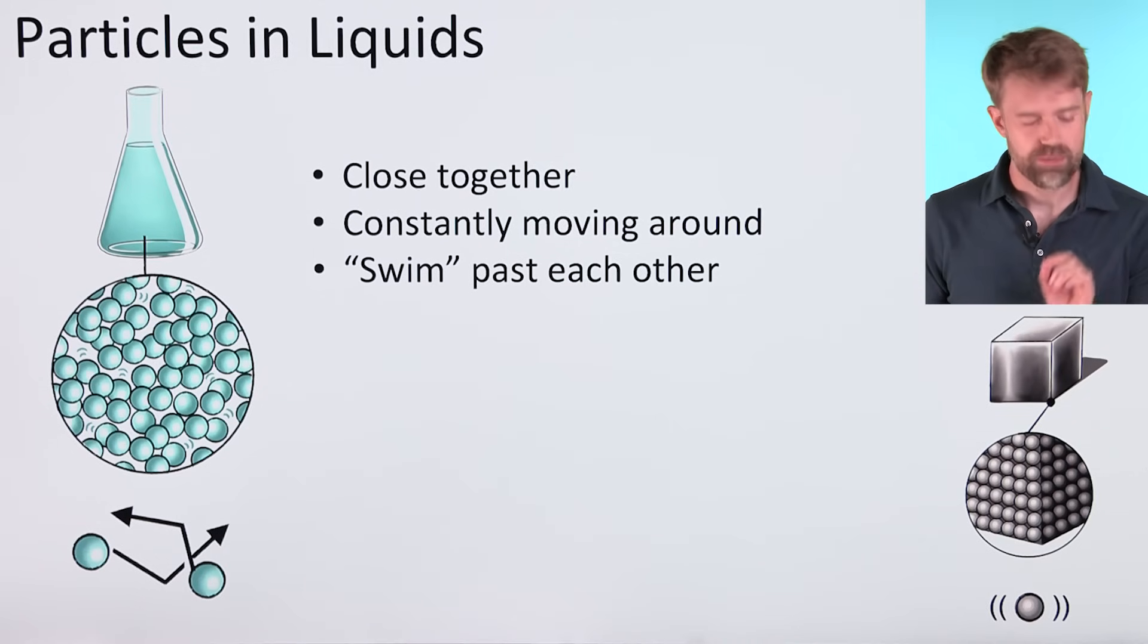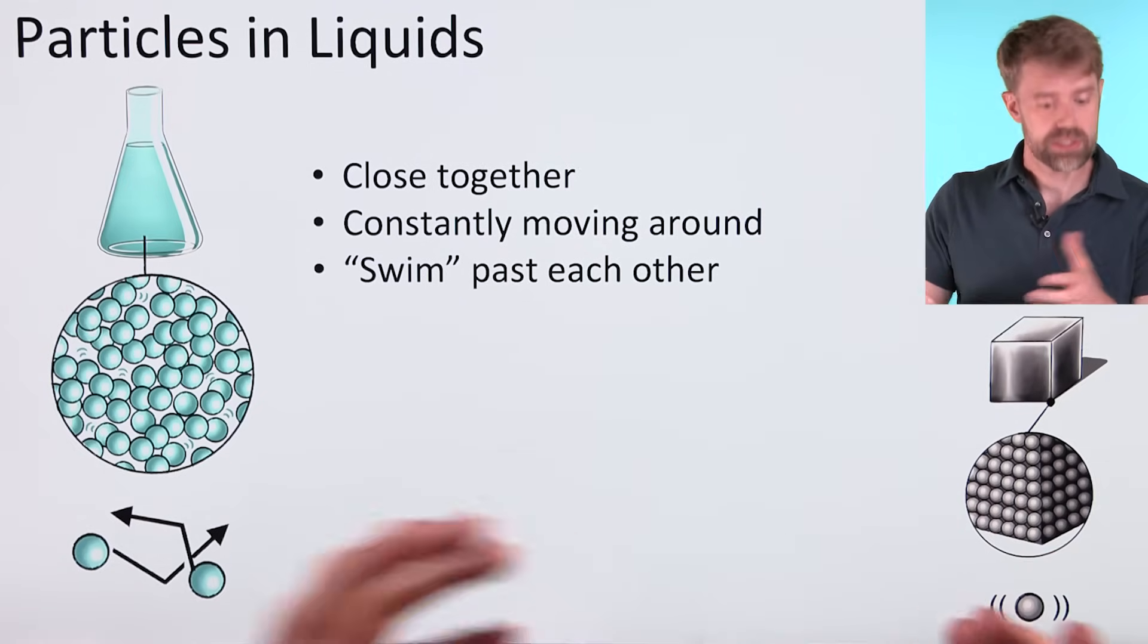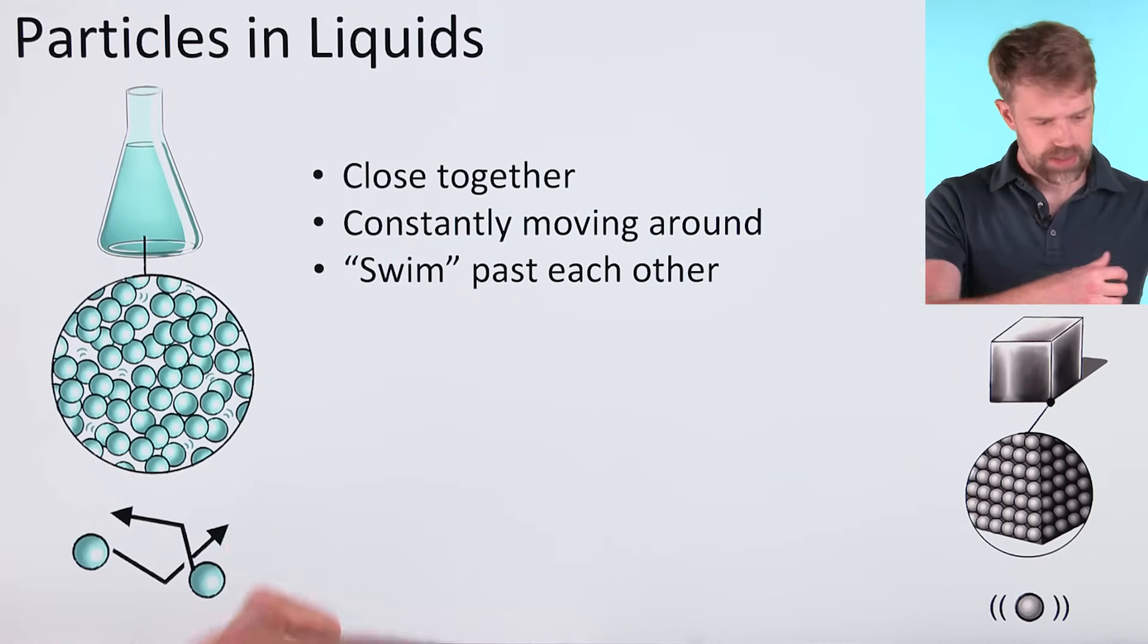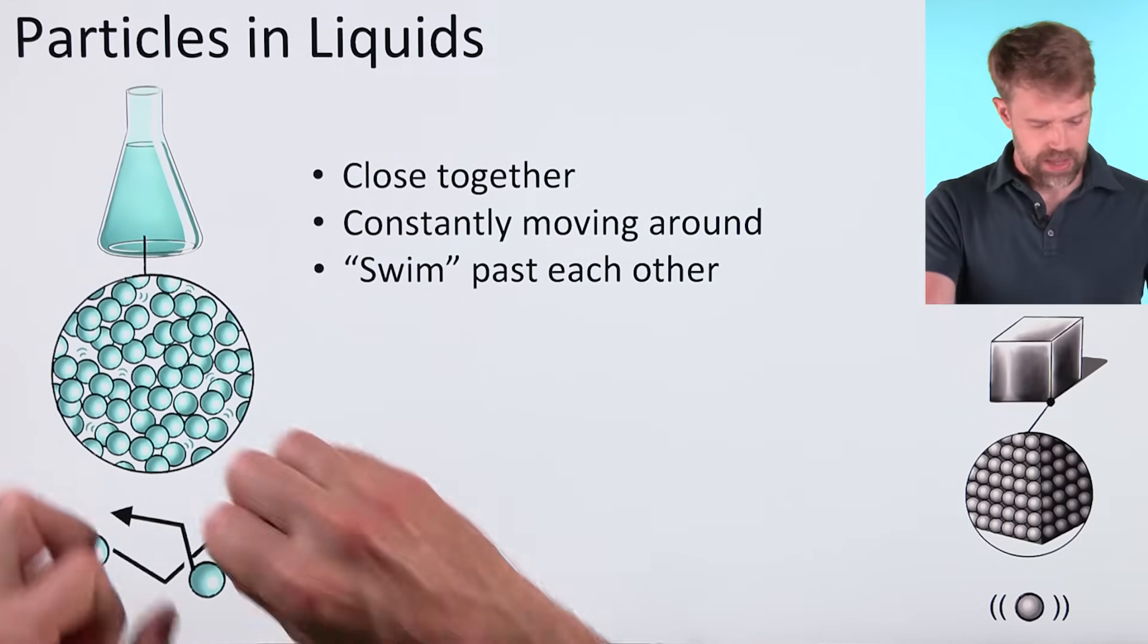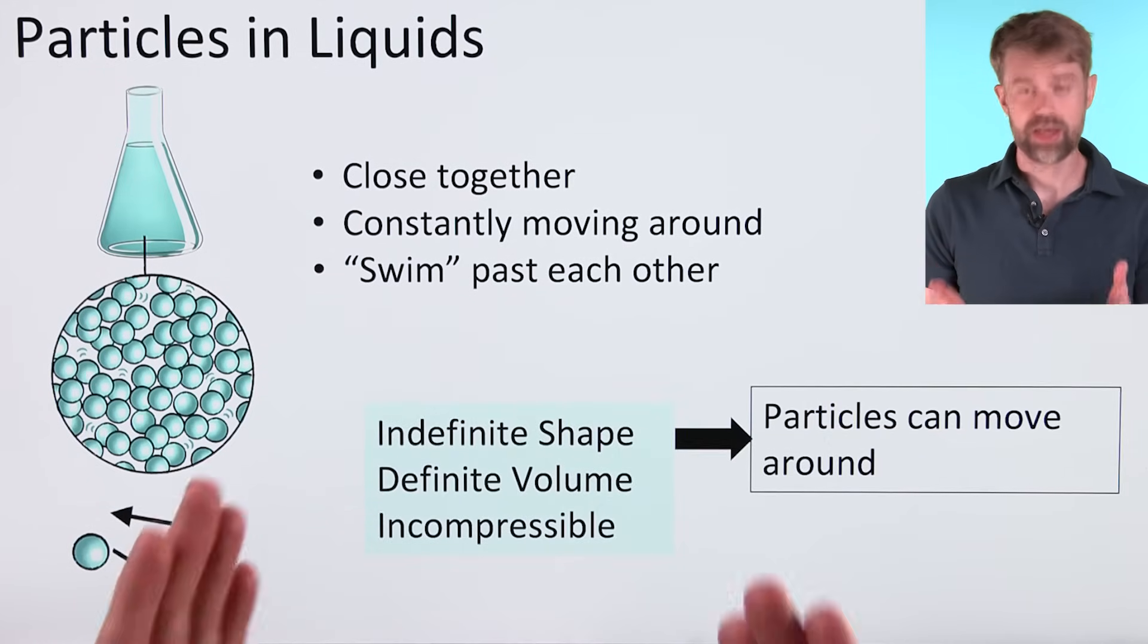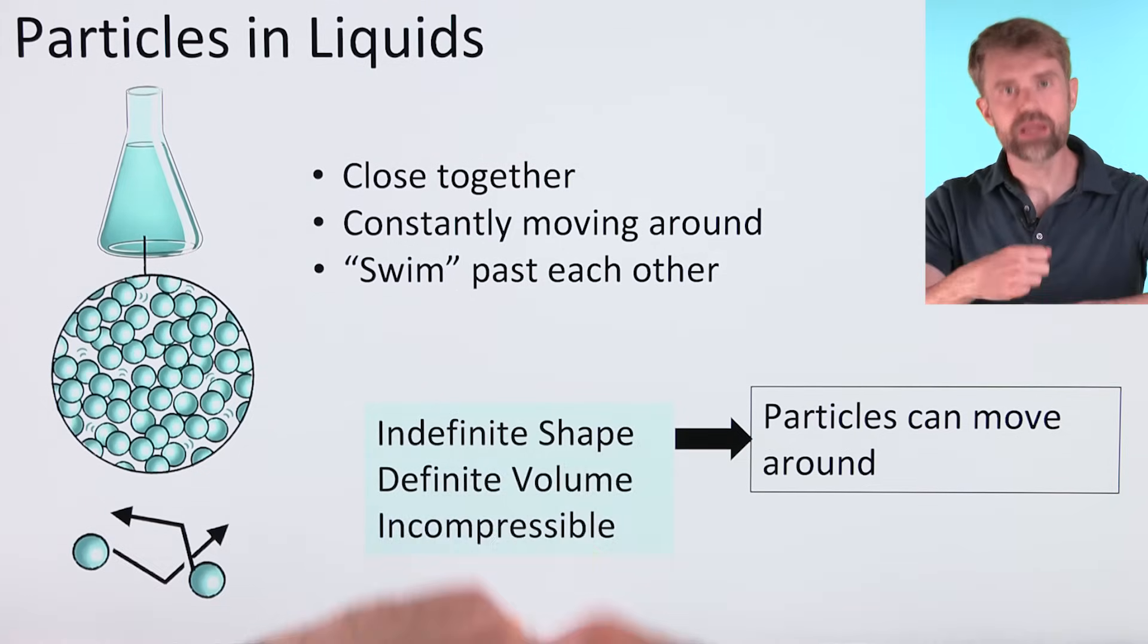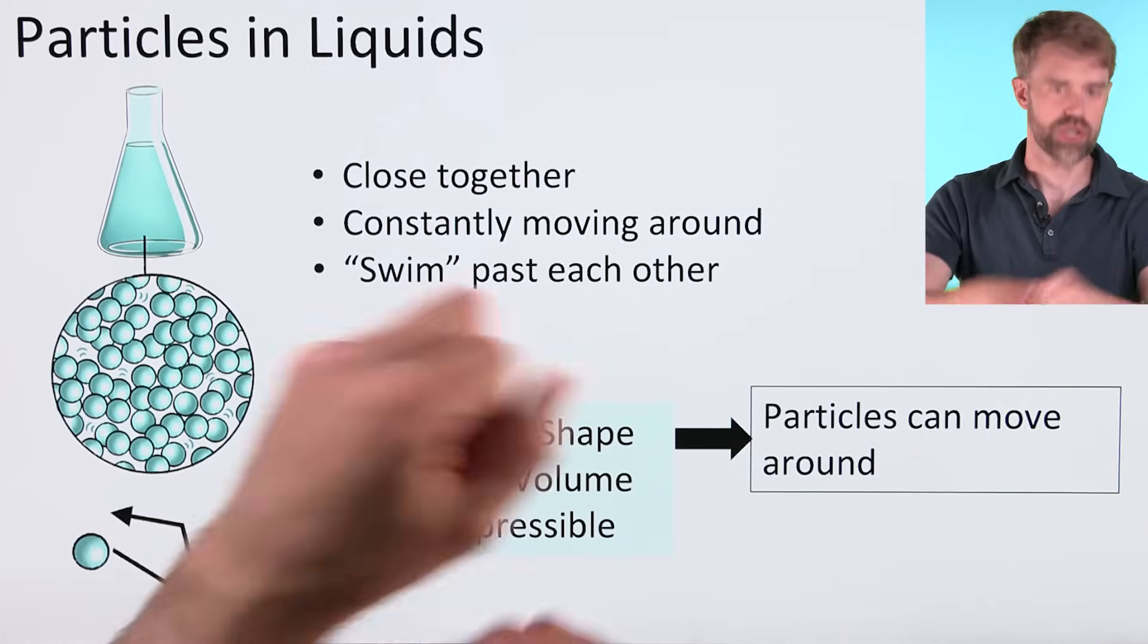Let's zoom in and see what the particles would look like in a liquid. Compared to the particles of a solid, you can see that the liquid particles are still pretty close together. But there's a big difference in movement here. The particles in a liquid are constantly moving around. In a solid, they're stuck vibrating in place. But in a liquid, they kind of swim or wiggle past each other. You can kind of see that here in the diagram. As before, there's a link between the behavior of the particles and these characteristics. Liquids have an indefinite shape because the particles can move around. They can move into new locations. That's how liquids pour. All the particles just kind of tumble over each other and then move into a new shape or a new layout.